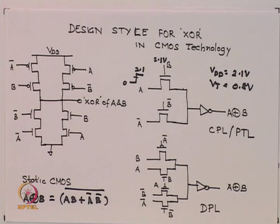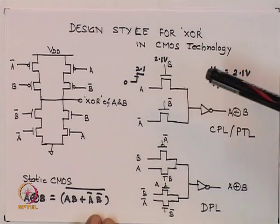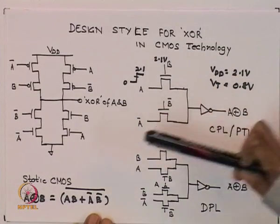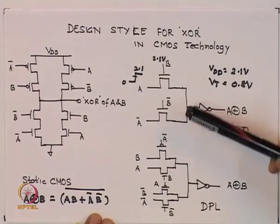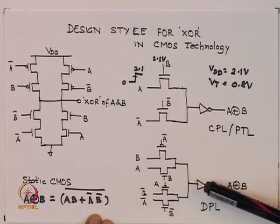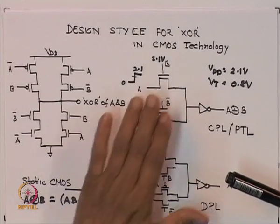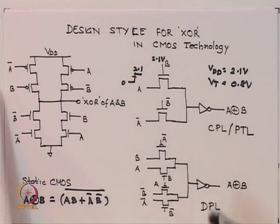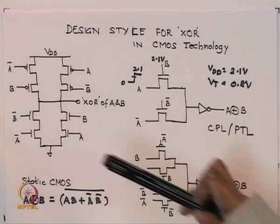Double pass transistor logic can also implement an XOR. In this case, you have two transistors for A·B_bar and A_bar·B plus two inverted transistors — four transistors total, compared to six in CPL and eight in static CMOS. Comparing transistor counts: static CMOS has 8, CPL has 6, and DPL has 4 — the area of DPL is the smallest, CPL next, and static CMOS the largest.